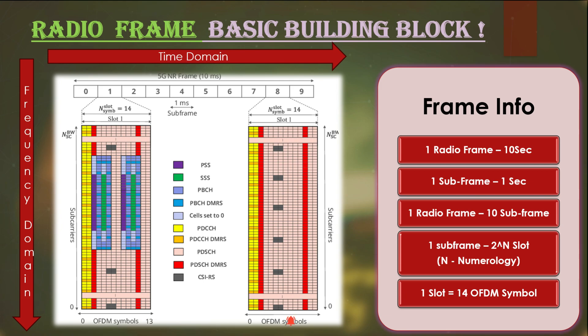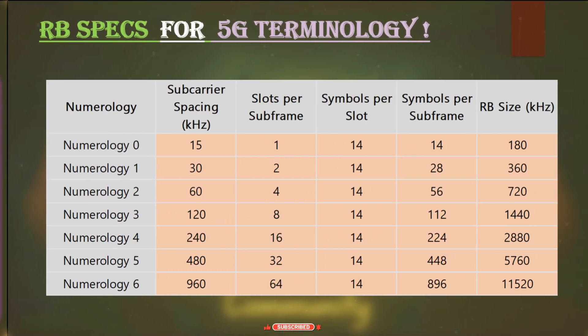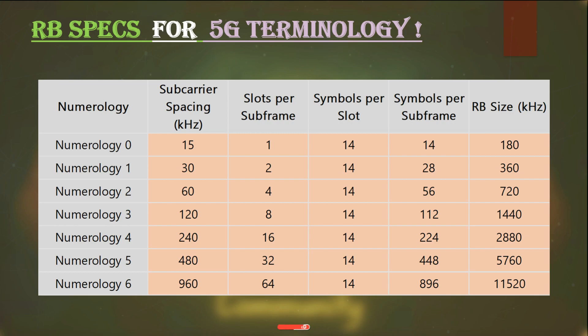One system frame is of 10 milliseconds and we are considering one subframe here which is of one millisecond. This subframe is again subdivided into slots and the number of slots depends on the numerologies in 5G, that you can see from the table on the screen. Note that each slot consists of 14 OFDM symbols.